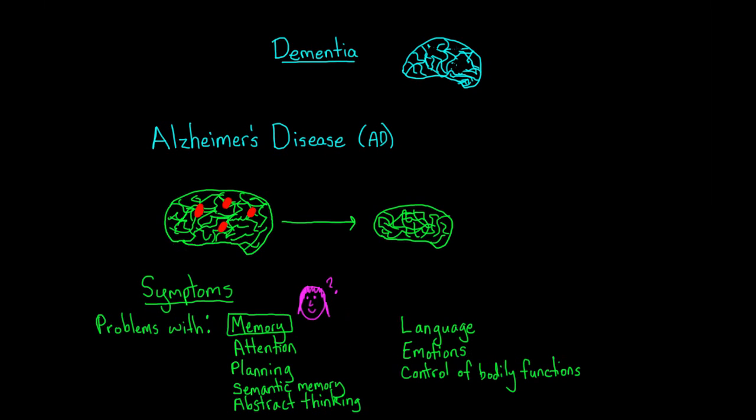We do know that people with AD experience a buildup of proteins called amyloid plaques in the brain. But how or why those plaques start to build up and exactly what role they play in the disease is still uncertain.